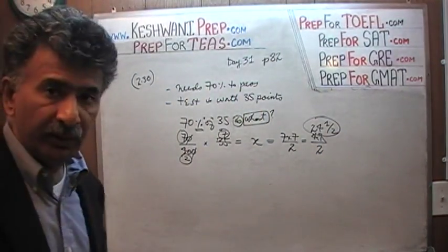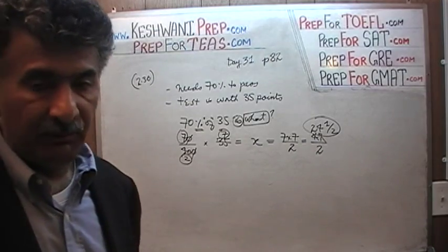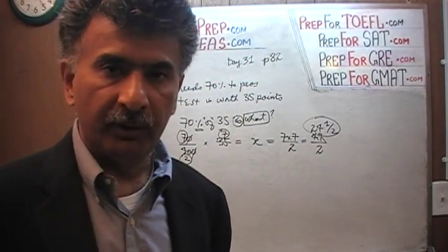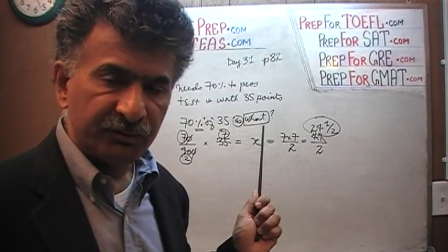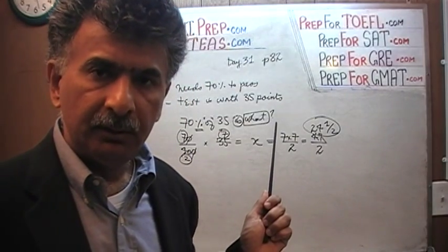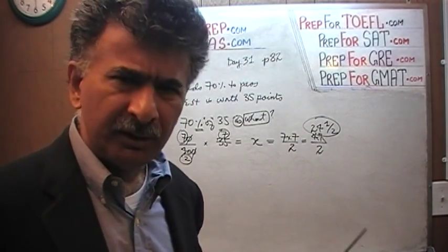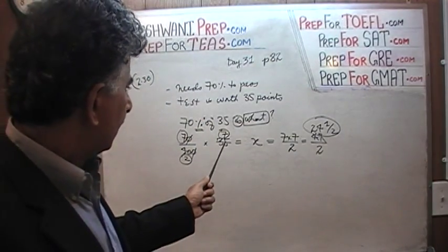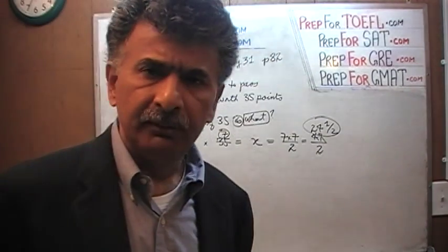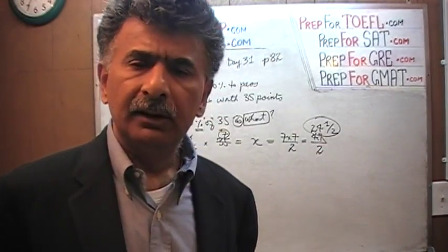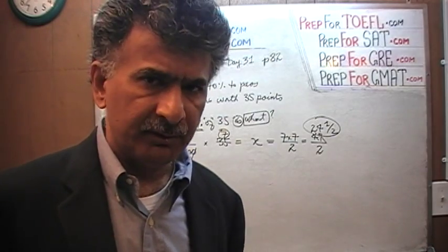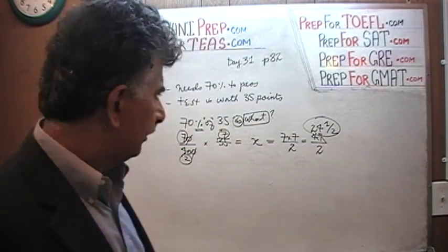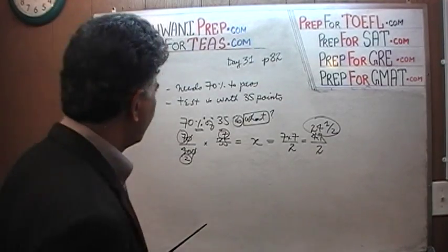Now this was one way of doing it — a very classical, traditional, orthodox, academic method. Let me show you the quick and dirty method. The quick and dirty method is to simply realize that 10% of a number is just one-tenth of it.